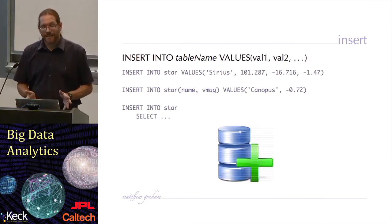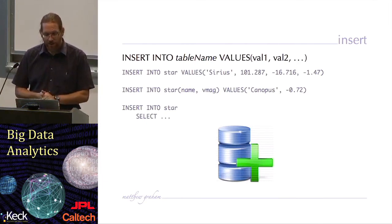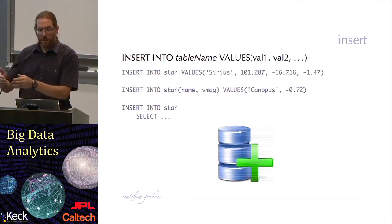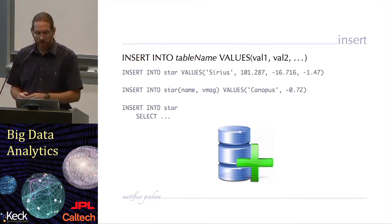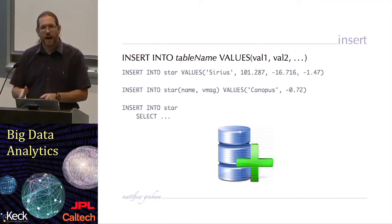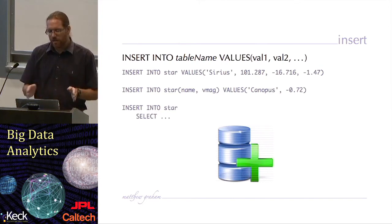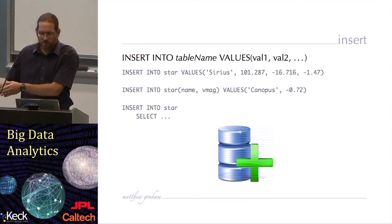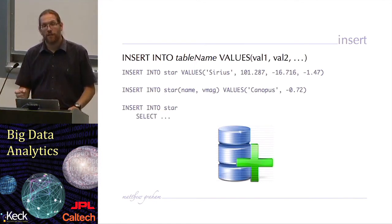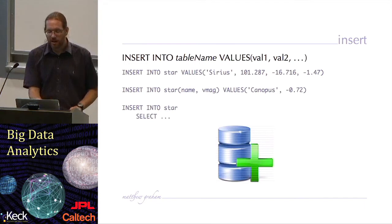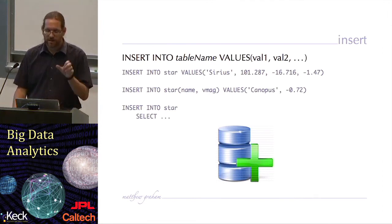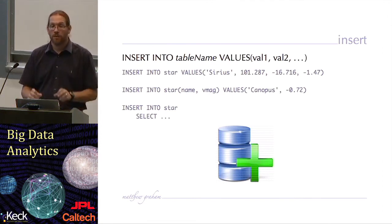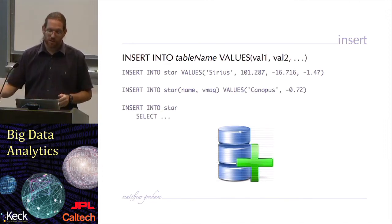If I want to put data into my database, I use the insert keyword. The syntax is insert into table name, then values, and the values themselves. So if I'm putting all the values for a particular row in, the first operation inserts into my table star the values for each column in the appropriate order: name, RA, dec, magnitude. If I only want to put information into certain columns, then I need to specify those columns before the values keyword — for example, insert into star specifying only name and V magnitude, putting in Canopus and minus 0.72.